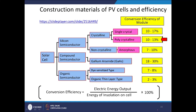Different materials have been investigated for PV cells. Silicon semiconductors may be crystalline or amorphous: single crystalline silicon gives 10–17% conversion efficiency, polycrystalline gives 10–13%, and amorphous (non-crystalline) gives 7–10%. Compound semiconductors such as gallium arsenide give 18–30% efficiency. Organic semiconductors include dye-sensitized types at 7–8% and organic thin-layer types at 2–3%. Conversion efficiency is defined as electricity output divided by energy of insolation on the cell, expressed as a percentage.